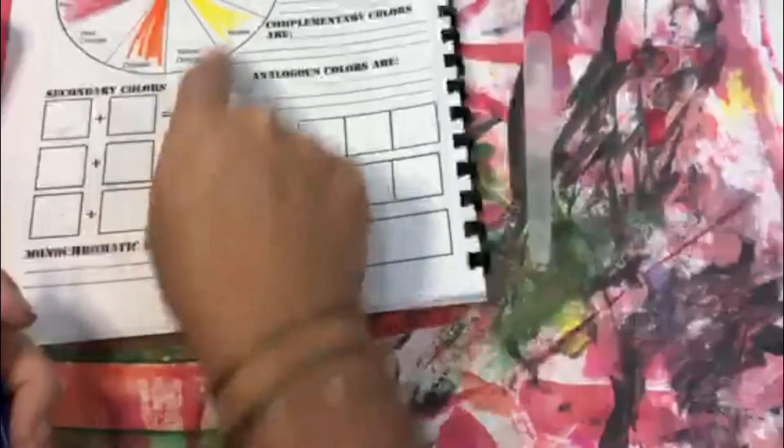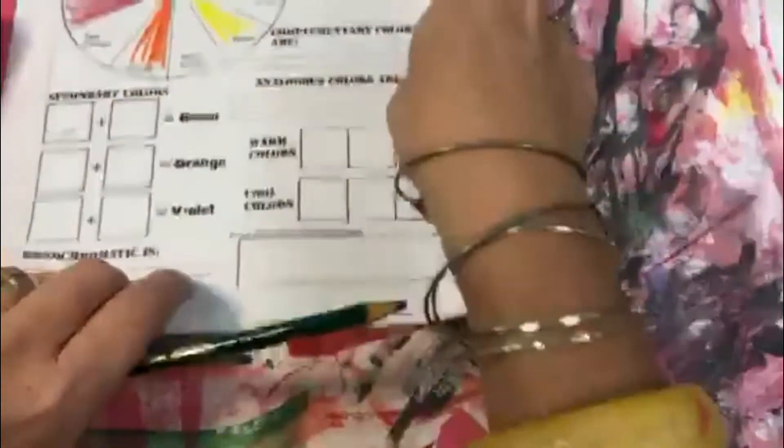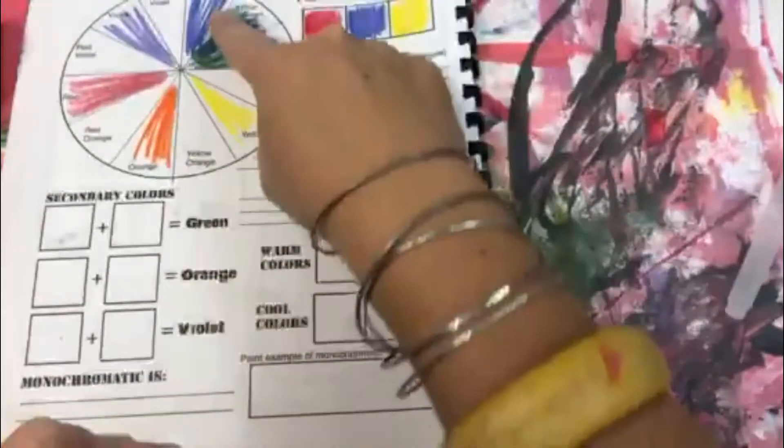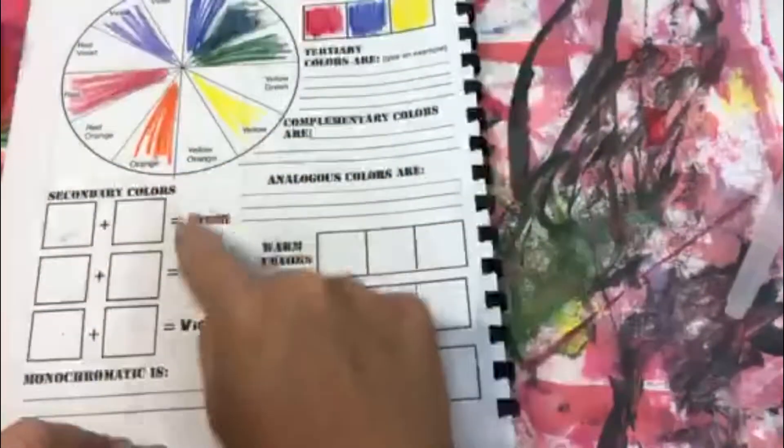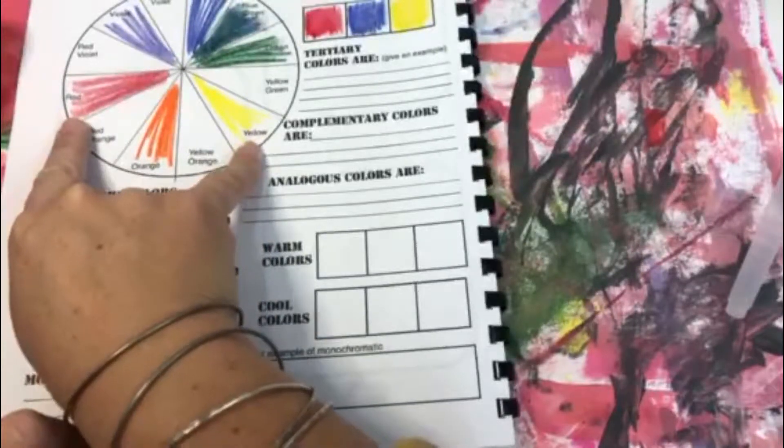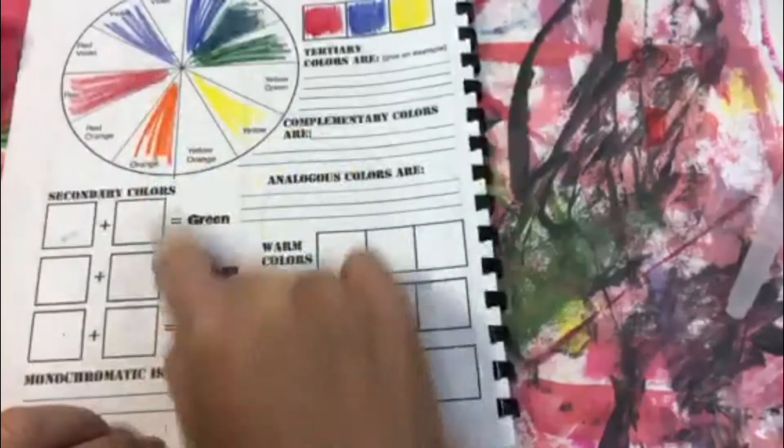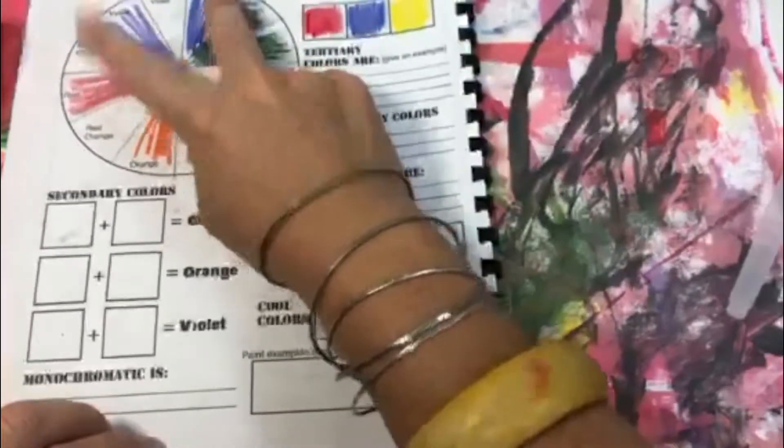You have your secondary colors. Again, that's what two primaries make green. Well if you look at your chart up here, find green. What primary's up? Blue. What primary's down? Yellow. So blue and yellow make green. Again, orange. Find orange. What two primaries are next to it? Yellow and red. Violet. Find violet. What two primaries are next to it? Blue and red. So that's how you're gonna fill in these warm colors and cool colors.